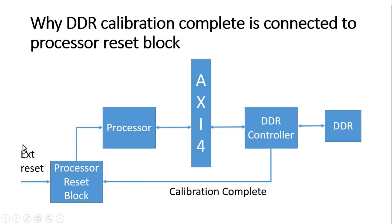If any of the reset signals is asserted, the processor reset block will assert the processor reset. That means when all the resets connected to this block are released, only then will it release the processor reset and the processor will come into active state; otherwise it stays in reset. If any of you know the answer, try to think about it and write it in the comment section.